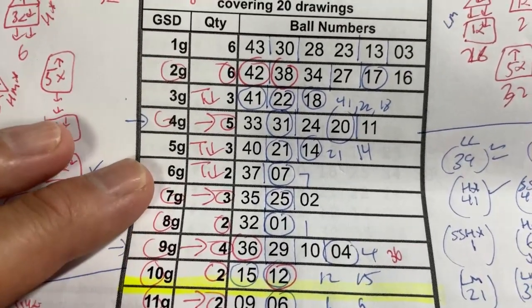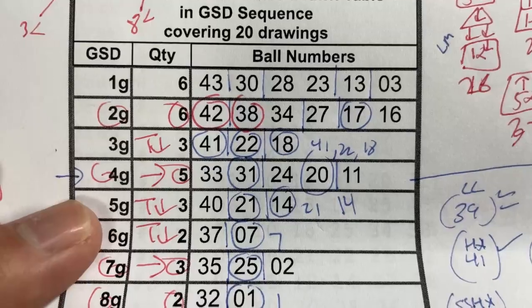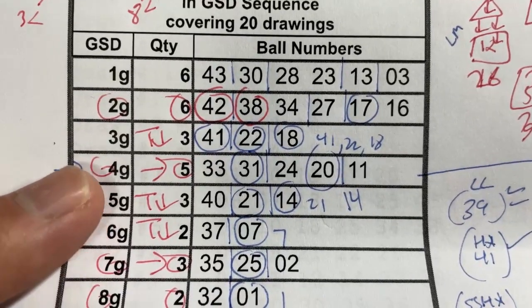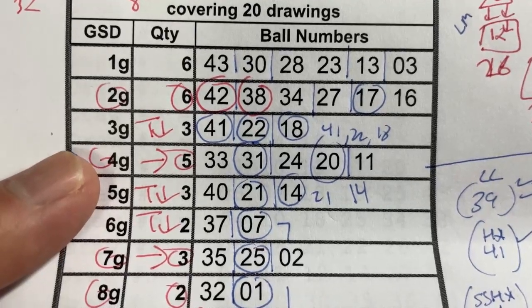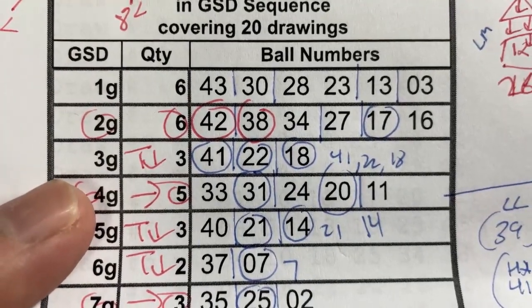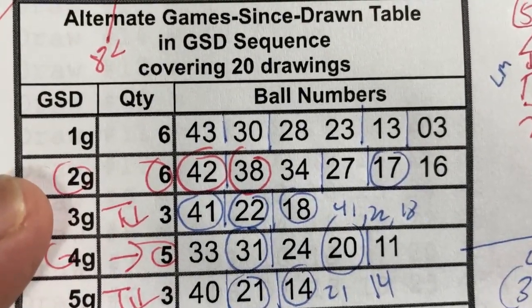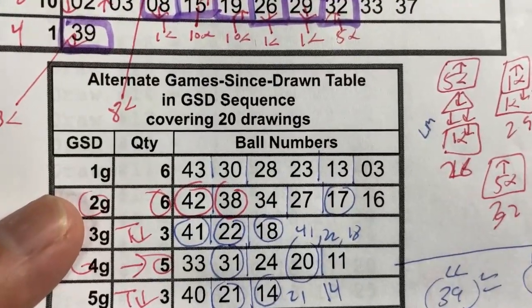And I like number 7 in 6G, and I like all the numbers in 4G except for number 33, and I like 22 and 41 in 3G, and I like the numbers in 2G.